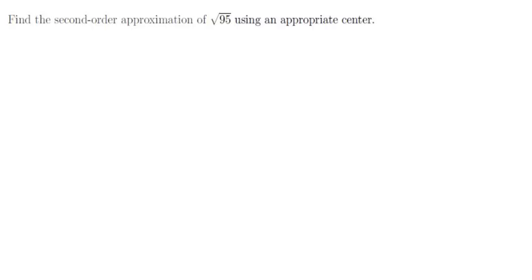Find the second order Taylor approximation of the square root of 95 using an appropriate center. We want to approximate the square root of 95 using a second order Taylor polynomial. Remember that Taylor polynomials approximate functions, not specific values, so we need a function to approximate first.